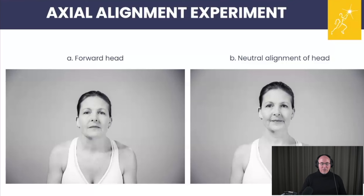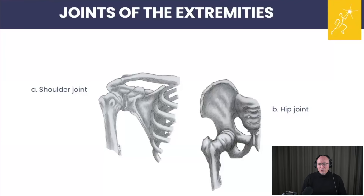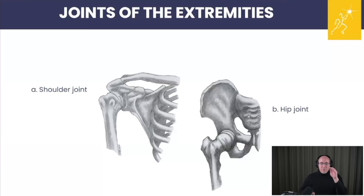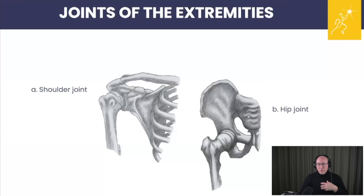Here we're looking at joints of the extremity. The first two that come up — upper and lower extremity — are the ball and socket joints of the shoulder and of the hip. They have a lot of similarities and some differences. Both are ball and socket joints with a cup and a round ball that moves in all planes. When we talk about a ball and socket joint we're talking about flexion, extension, side bending, abduction, adduction, internal rotation, external rotation, and circumduction — both joints have all those capacities of movement.